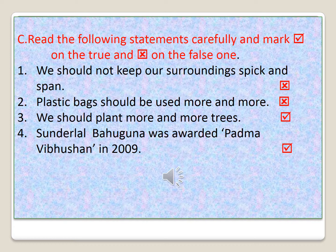Number three: we should plant more and more trees — this is correct, because we have destroyed our forests and that is why we see so many pollution problems today. Number four: Sundarlal Bahuguna was awarded Padma Vibhushan in 2009 — this is also correct. He received this award for the Chipko movement.